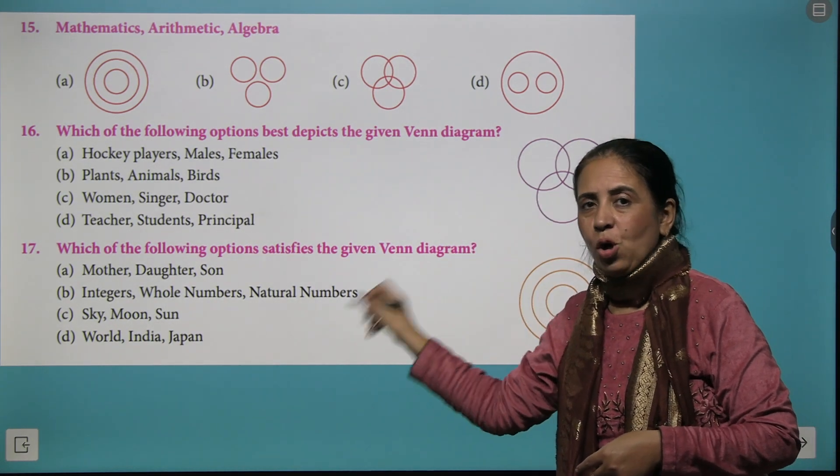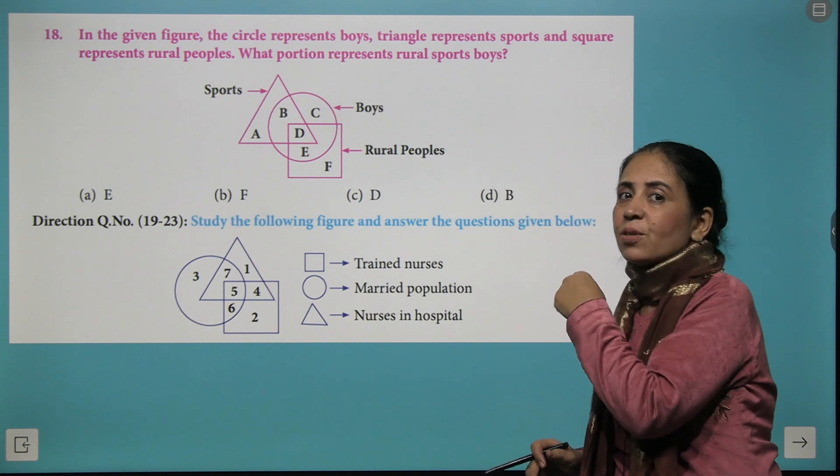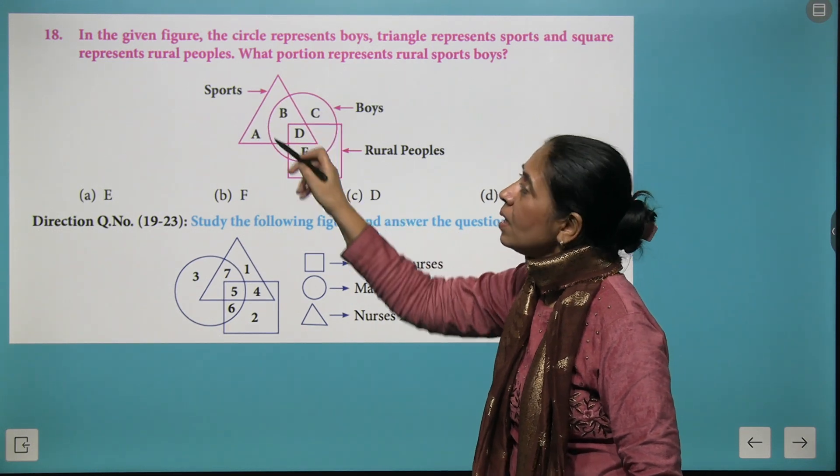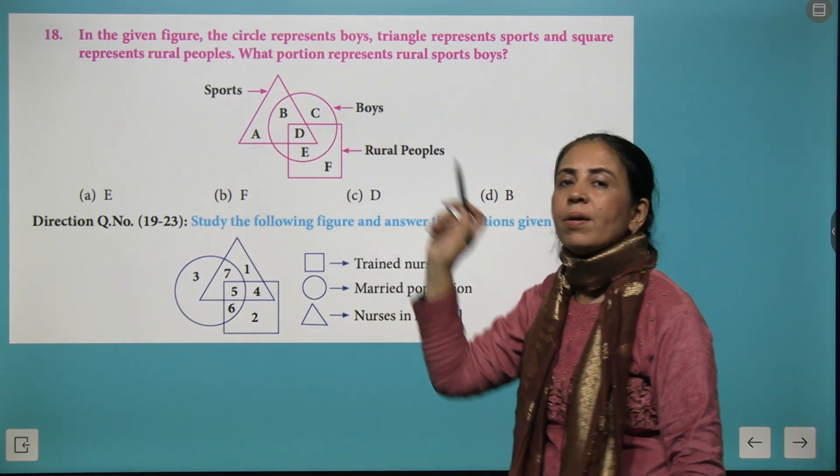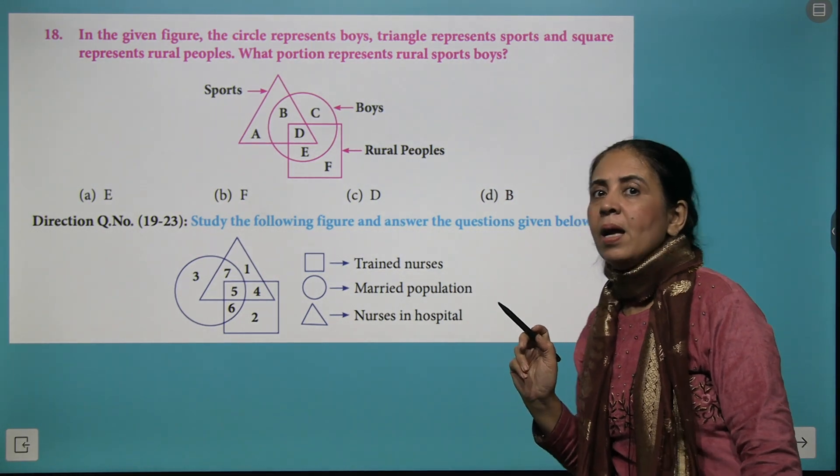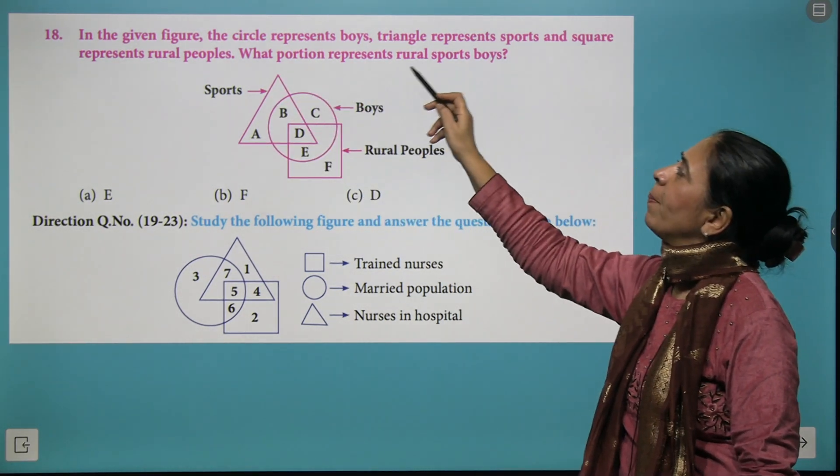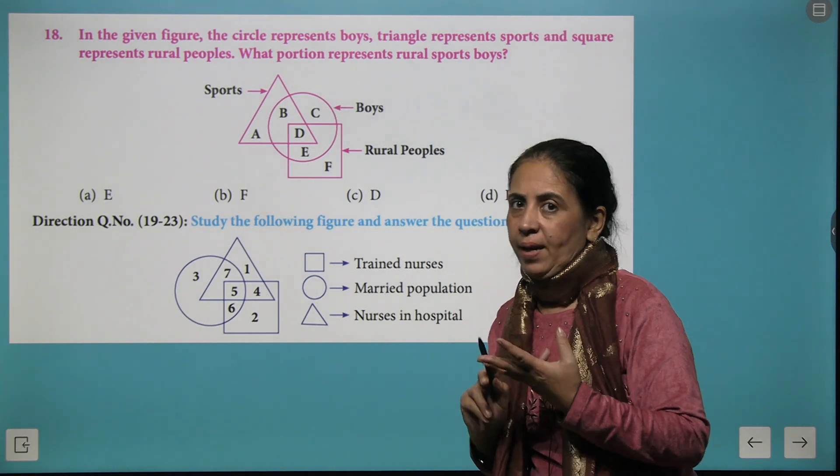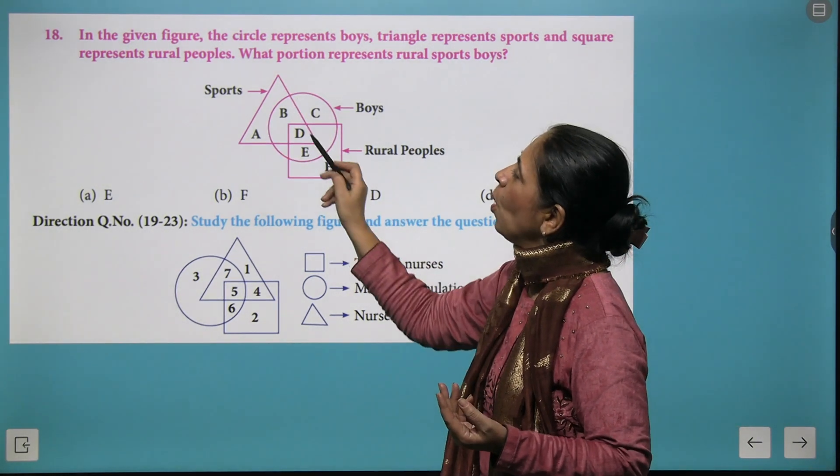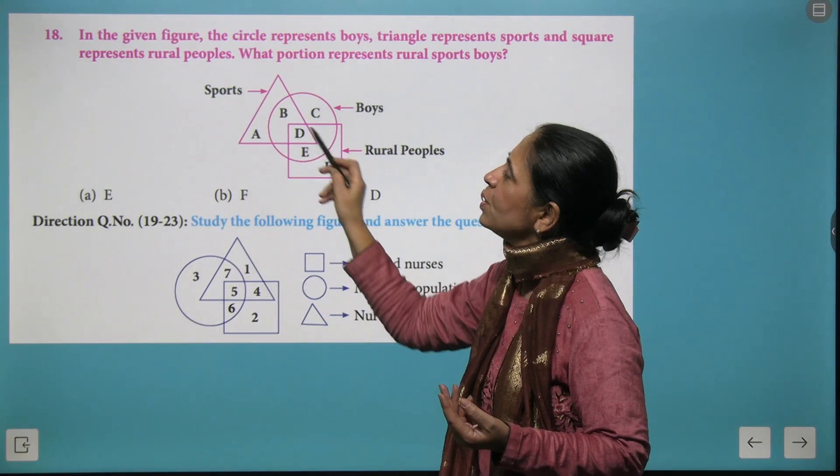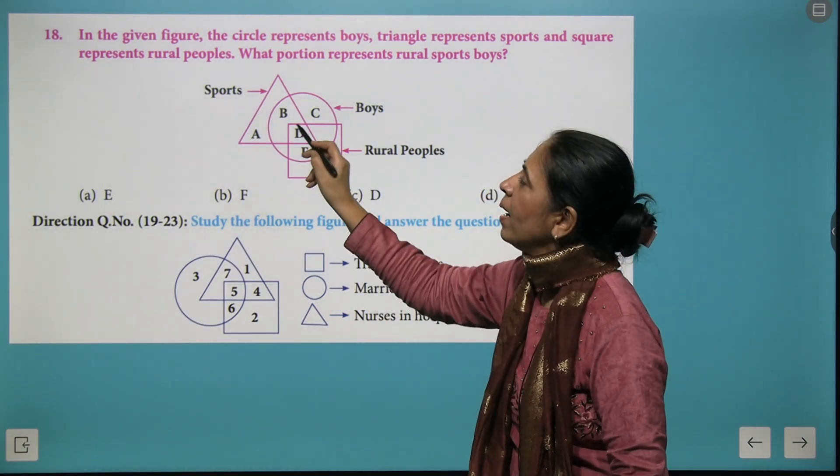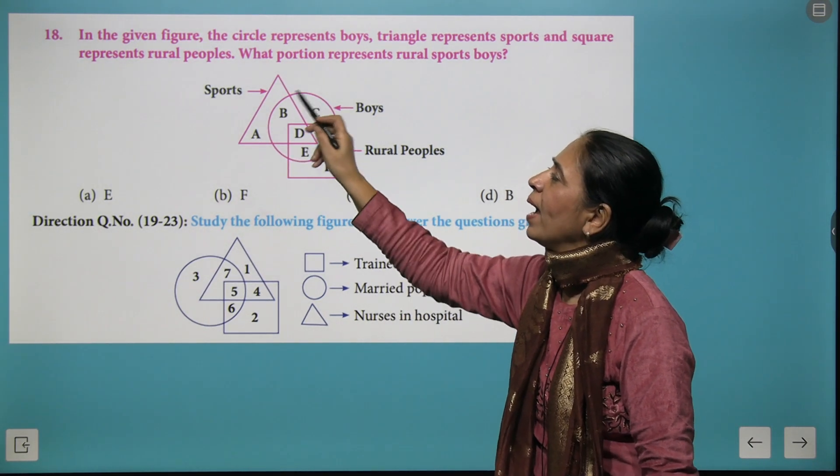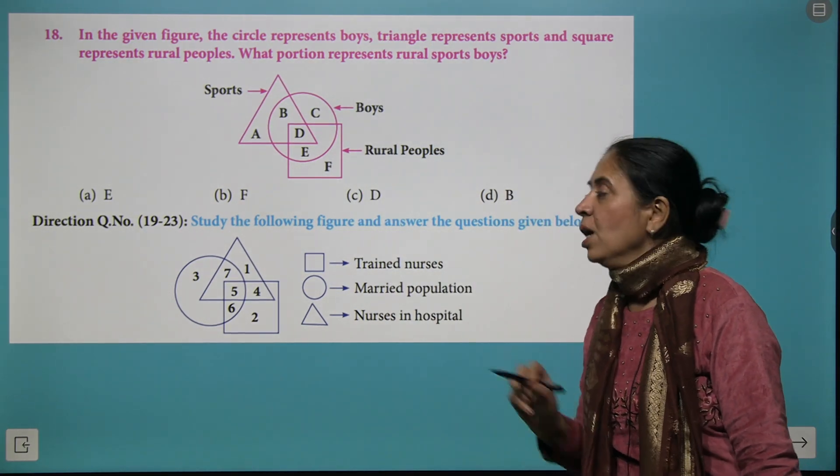Let's read this very interesting question where the triangle represents sports, the circle represents boys, and the square represents rural people. The question is: what portion represents rural sports boys? That means all three things need to be covered. And on observing these figures, we find that D part is the right answer because it includes the part of the square, the triangle, and the circle as well.